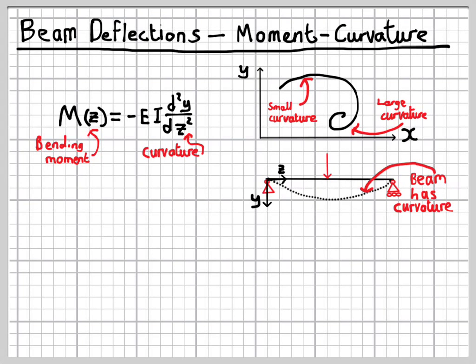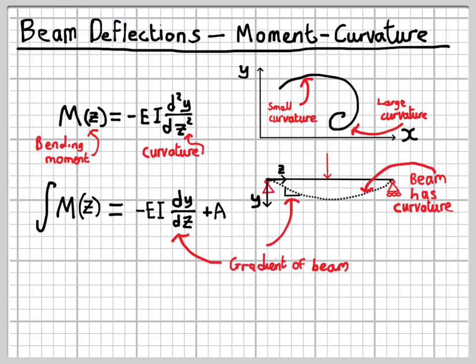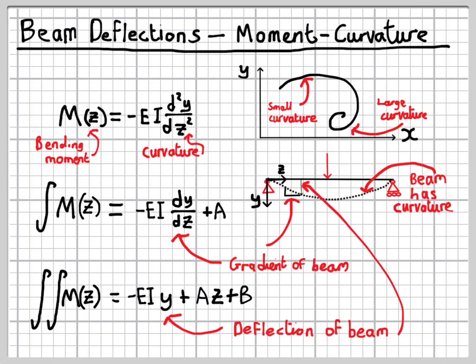So to see how this works conceptually, we'll work through the maths, and then we'll apply it to an example. So here we've integrated once, and we see that we've now got dy by dz appearing in the equation. Now dy by dz is the gradient of a beam, so this in itself might be useful. If we integrate again, then we get an expression with y, and it's y, the deflection of a beam, that we're looking for here.